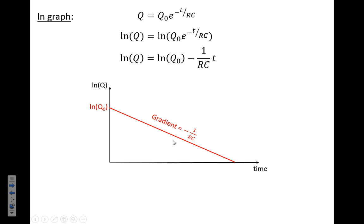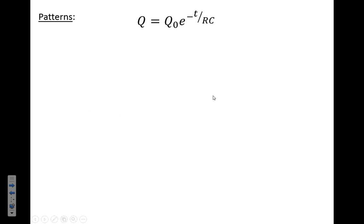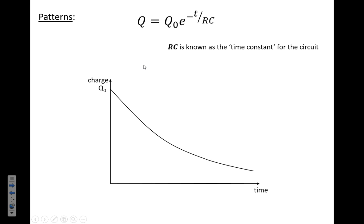So we've got a couple of patterns we're going to look at here. Just a reminder that RC is known as the time constant. Plot charge against time, so it goes down like this starting at Q naught.